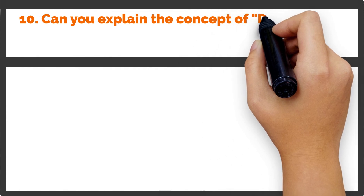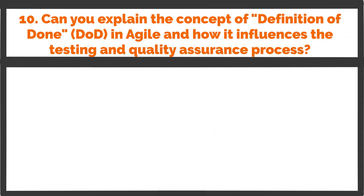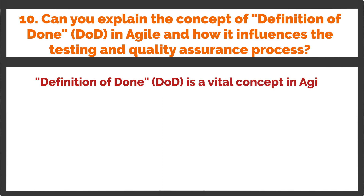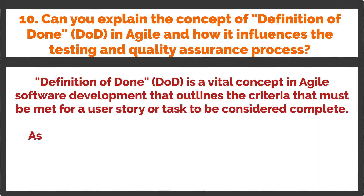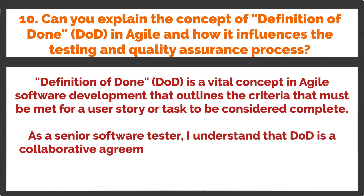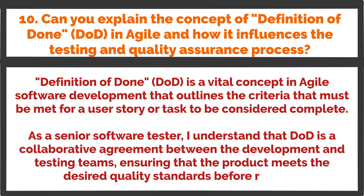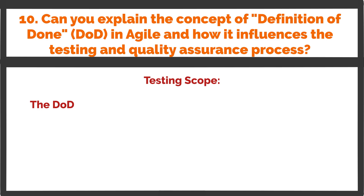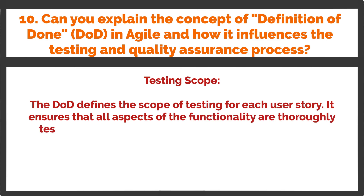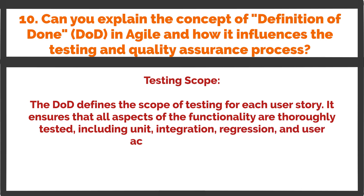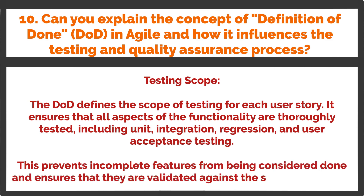Question 10: Can you explain the concept of Definition of Done (DOD) in Agile and how it influences the testing and quality assurance process? Definition of Done (DOD) is a vital concept in Agile software development that outlines the criteria that must be met for a user story or task to be considered complete. DOD is a collaborative agreement between the development and testing teams, ensuring that the product meets the desired quality standards before release. Testing scope: The DOD defines the scope of testing for each user story, ensuring that all aspects of the functionality are thoroughly tested, including unit, integration, regression, and user acceptance testing. This prevents incomplete features from being considered done and ensures they are validated against the specified criteria.